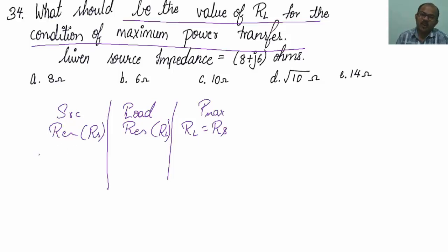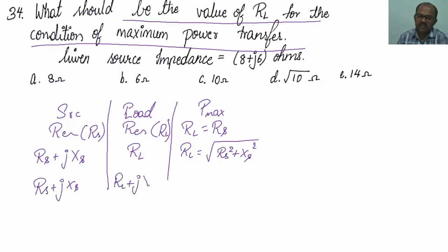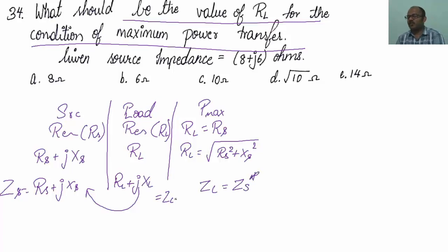Case 2: if the source impedance is complex — RS plus jXS — and the load is pure resistive RL, then RL equals the square root of RS squared plus XS squared. Case 3: when the source has complex impedance ZS and the load is ZL equals RL plus jXL, then ZL should be the complex conjugate of ZS — if the source has plus, the load should have minus, and vice versa.